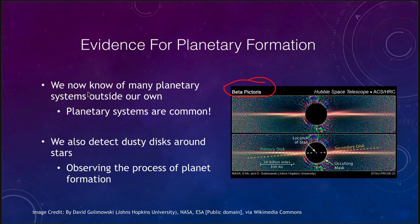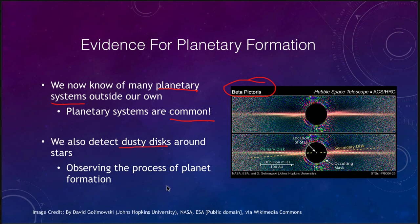One of the key developments of recent decades is that we now know of many planetary systems outside our own, and they are quite common. We now know of thousands of planets outside our solar system — back in the mid-1980s we didn't know for sure of any. We detect dusty disks around stars like beta Pictoris, and it looks like planetary systems are forming there, since we know that planetary systems are common.